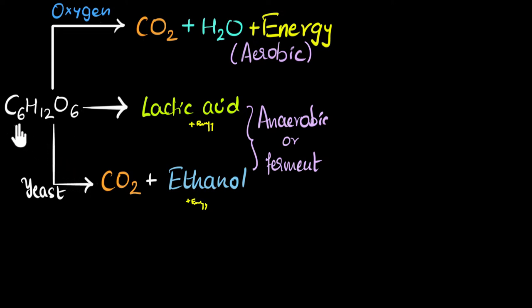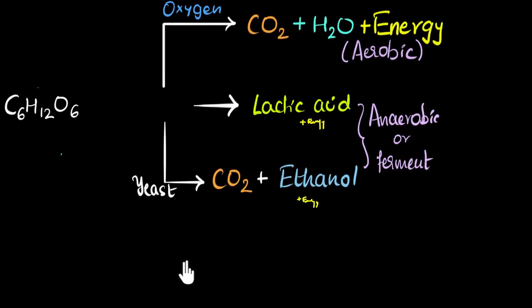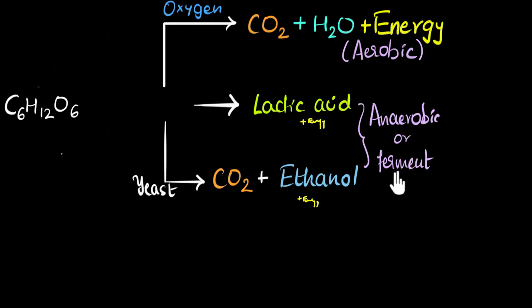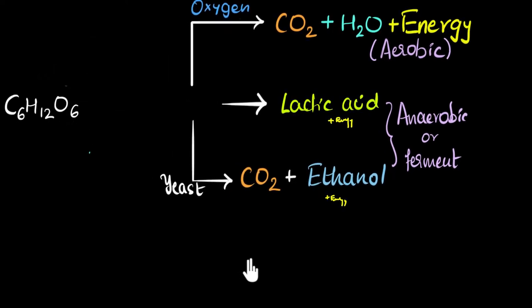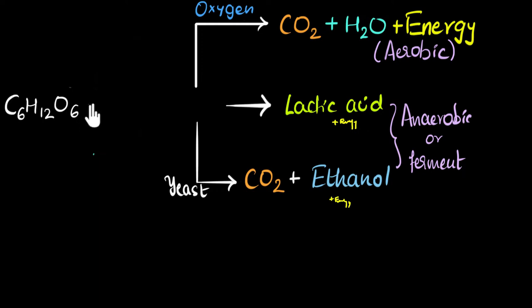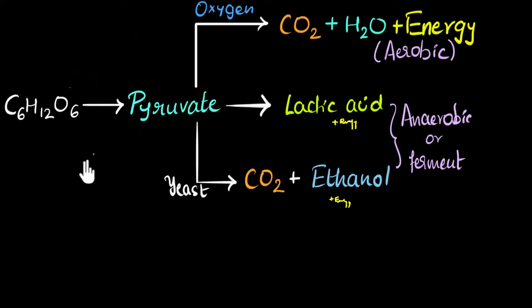Regardless of which type of respiration you want to do — aerobic, lactic acid fermentation, or ethanol fermentation — the first step is common. In the first step, glucose gets broken into two pieces — two molecules called pyruvate — and in this process a little bit of energy is released.